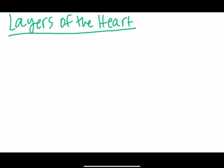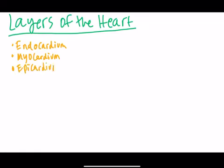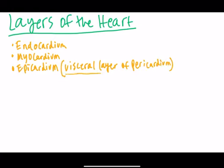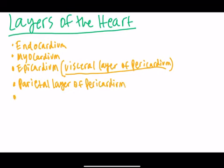The layers of the heart are: the endocardium, the myocardium, the epicardium — also called the visceral layer of the pericardium — the parietal layer of the pericardium, and last but not least, a layer of fibrous tissue, which is the outermost surrounding layer of the heart.